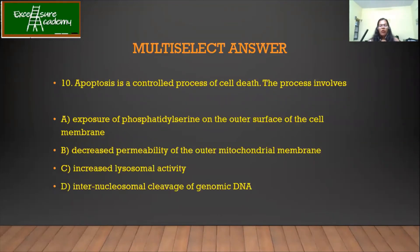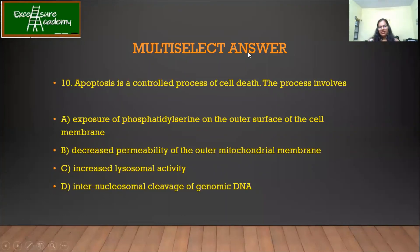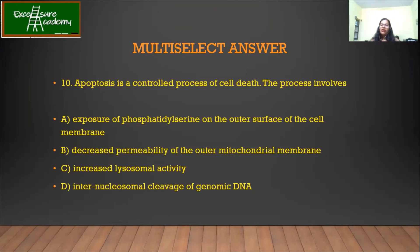Last question — I hope everyone got the correct answer. Apoptosis is a controlled process of cell death. The process involves what? This is a multi-select answer question — different from the morning set — meaning it might have more than one correct answer. The exposure of phosphatidylserine on the outer surface is one correct answer.